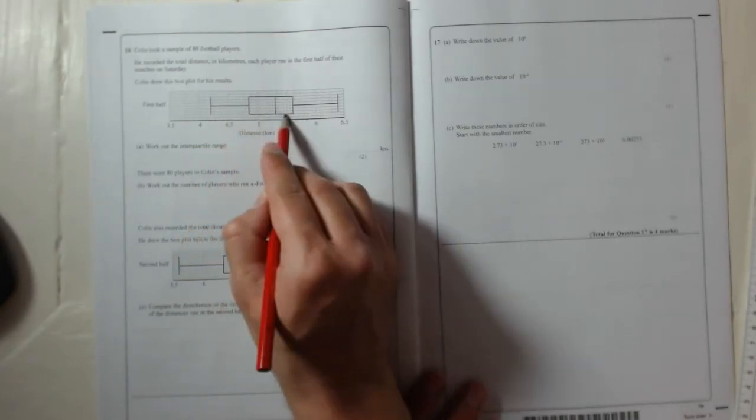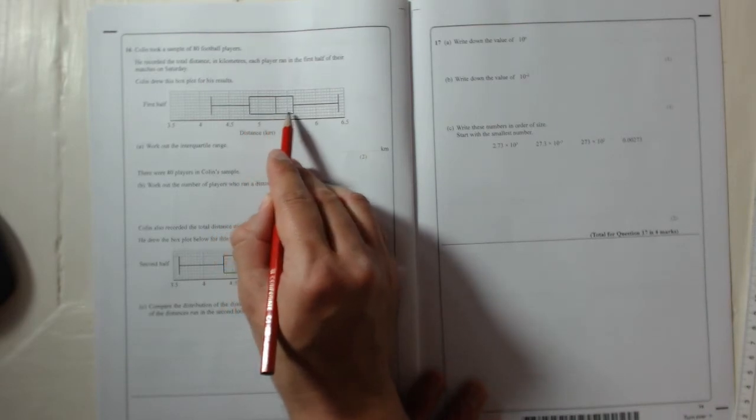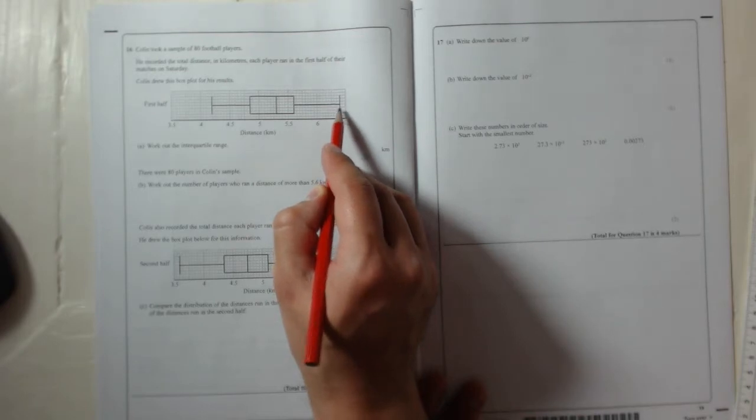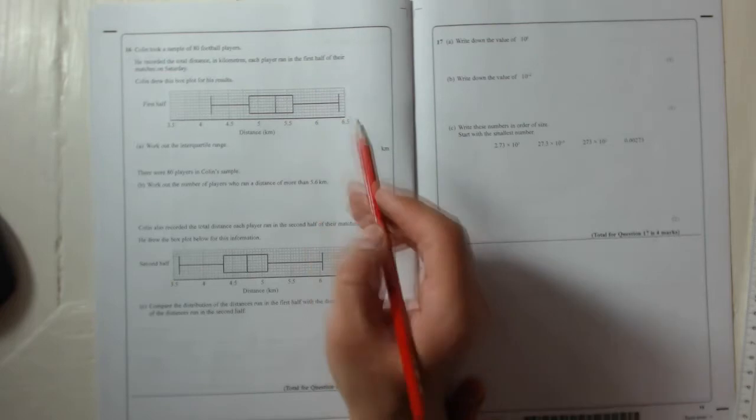Now on the box you've got the lower quartile, the median, and the upper quartile. And then over here you've got the maximum, the most anyone ran. So the most anyone ran was 6.4 kilometres in the first half.